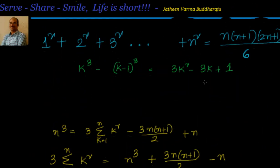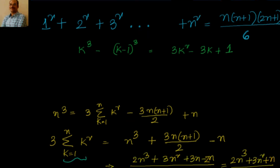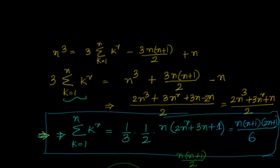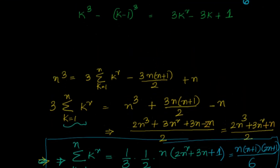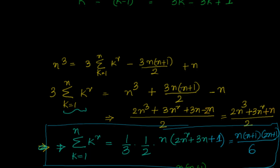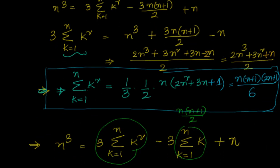Let us recap how we solved it. We had to find the sum of squares of n natural numbers. We leveraged the identity k cube minus (k-1) cube equals 3k square minus 3k plus 1, substituted k from 1 to n, used telescoping cancellation to get n cube, then substituted the known formula n(n+1)/2 for the sum of natural numbers. Simplifying gave us n(n+1)(2n+1)/6.